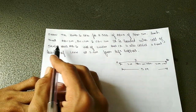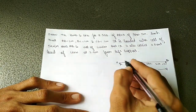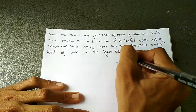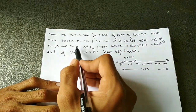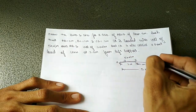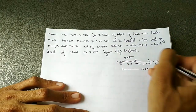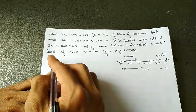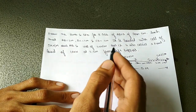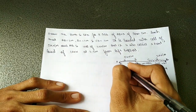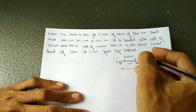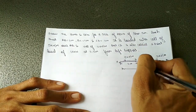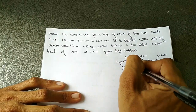The beam is loaded with a UDL of 5 kN per meter over A to B, and a UDL of 2 kN per meter over C to D. It also carries a point load of 10 kN at 2.5 meters from the left support — let us call that point E.